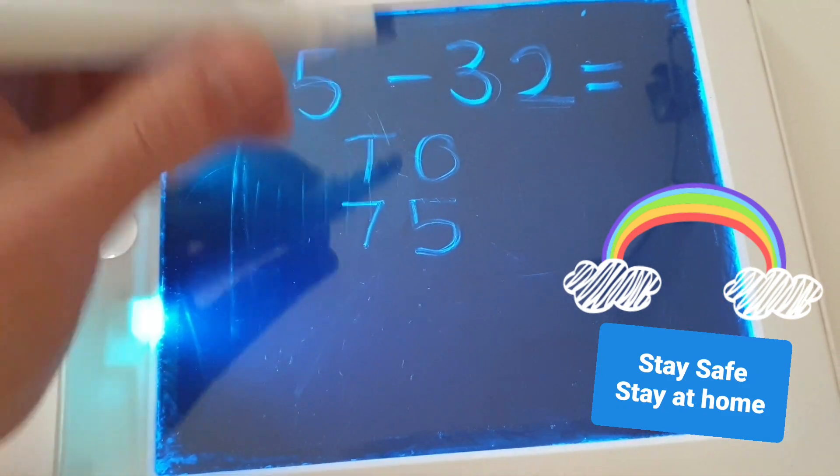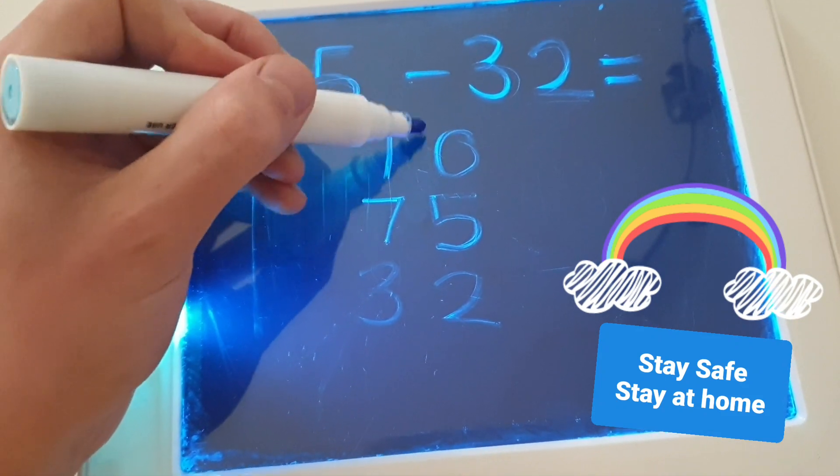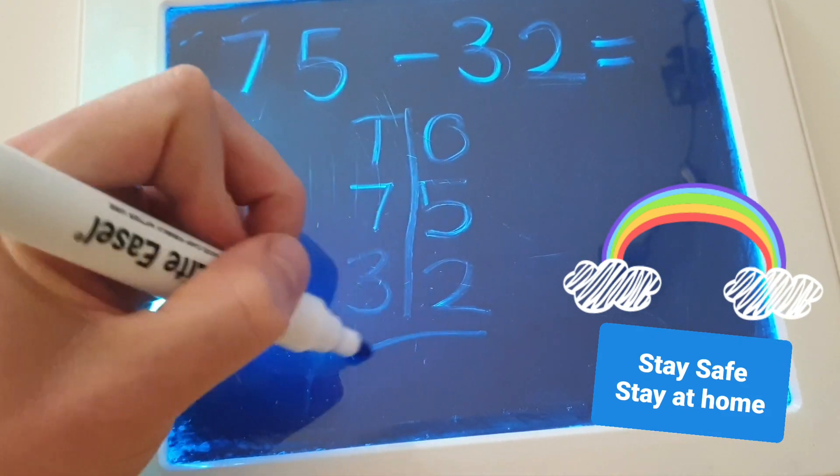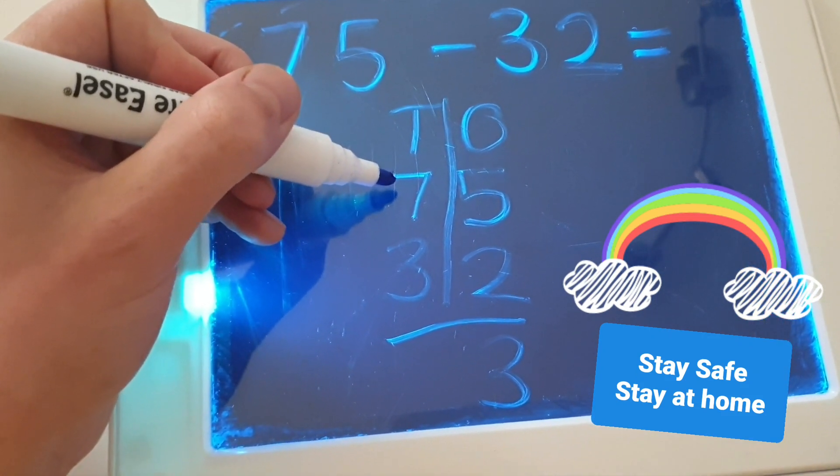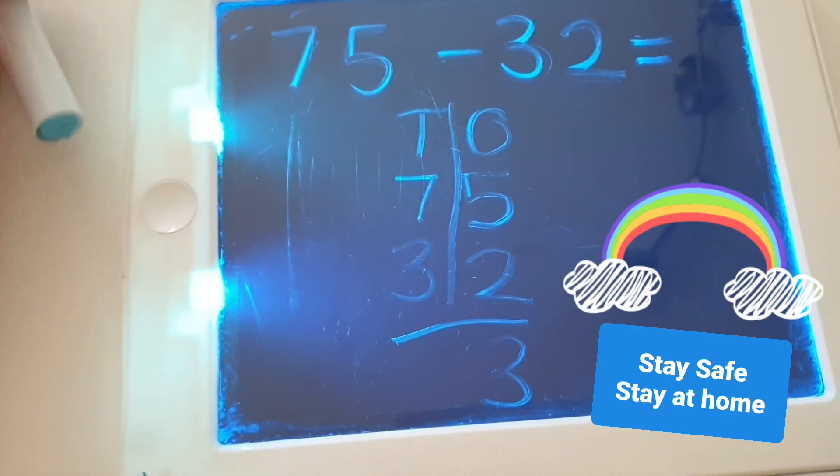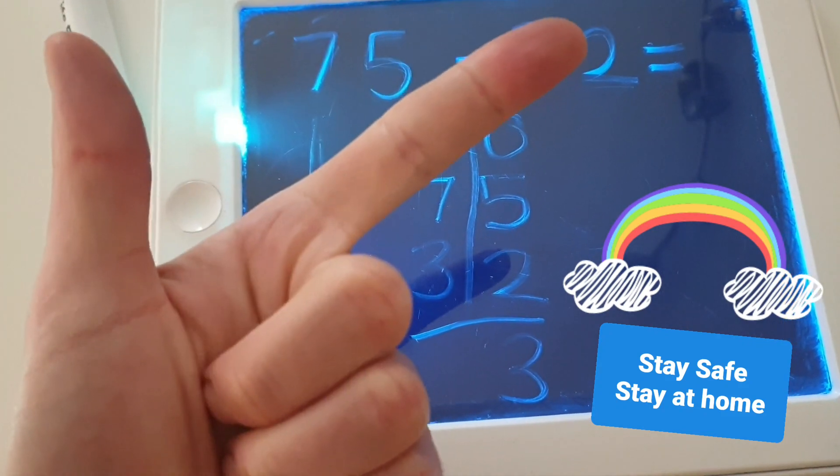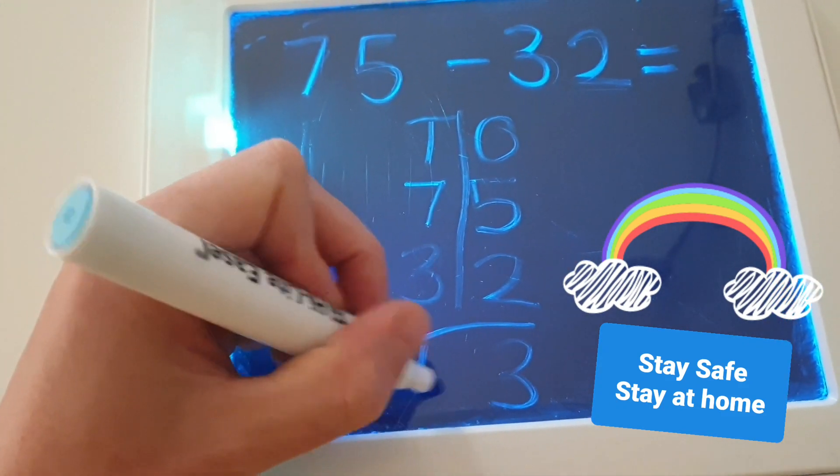We're going to be subtracting from that thirty-two. So let's look at our ones column. We've got five ones, subtract two ones. Five subtract two is three. And then we've got seven tens, subtract three tens. Seventy, sixty, fifty, forty. Four tens remaining.